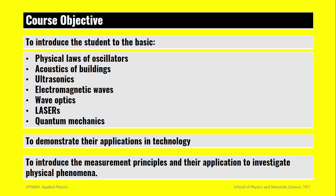Then we will go into electromagnetic theory, then some wave optics, then we will introduce lasers and then quantum mechanics. In all cases we will give you some examples of their applications. This course is basically to demonstrate physical laws and their replication in technology and engineering. There is also a sub part where we will take you to our academic laboratories, where you will be introduced to measurement principles, how to take measurements, and the applications to investigate real physical phenomena.